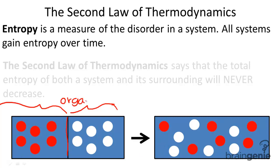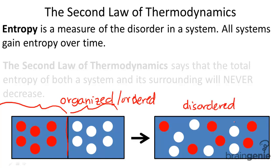This original state is what we call organized or ordered. However, if we look at the system now, this has become disordered. Therefore, we say that it has gained entropy — entropy, given by the variable S, has increased. So the disorder of the system has increased, and that's what entropy is.